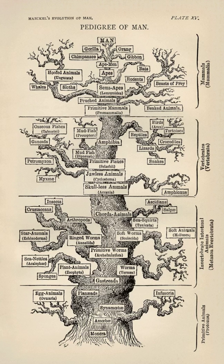Evolution is the central unifying concept in biology. Biology can be divided in various ways. One way is by the level of biological organization, from molecular to cell, organism to population. An earlier way is by perceived taxonomic group, with fields such as zoology, botany, and microbiology, reflecting what were once seen as the major divisions of life.